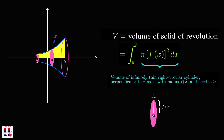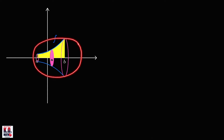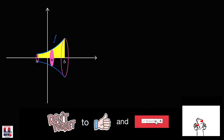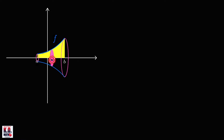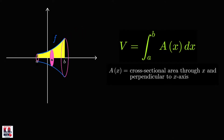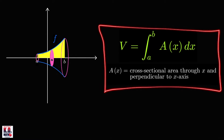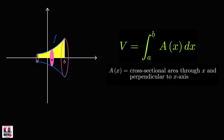Another way to remember this formula is by slicing the solid through x, where the cross section is perpendicular to the x-axis, the axis of rotation. If the area of this cross section is A of x, then the volume equals the integral from a to b of A of x dx. This formula also works for other solids not necessarily solids of revolution—this strategy is called finding volumes by slicing.